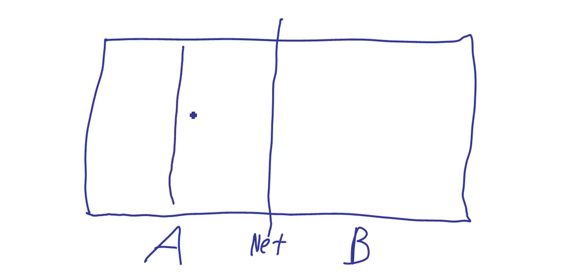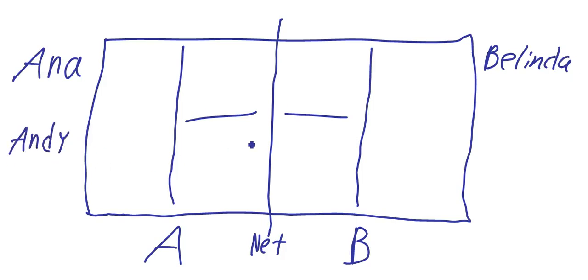There is a net and this is the playing field. It has some lines on it. On one side is player A and on the other side is player B. If you want to have names for the players, say Anna from Serbia against Belinda from Switzerland, or Andy from Scotland versus Bernard from Australia. Two of them will play against each other.